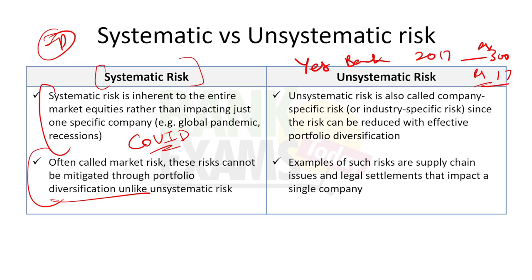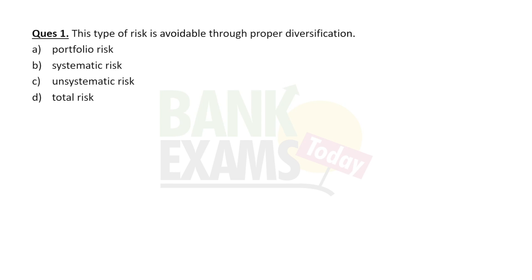Unsystematic risk can be avoided with the help of diversification. Systematic risk is market-wide and cannot be avoided — if the entire market is falling due to COVID, your stocks will also fall. Unsystematic risk is company-specific and can be avoided through proper diversification. Yes Bank ka jo risk tha, woh avoid kiya ja sakta tha agar aap poori Nifty mein invest karte.